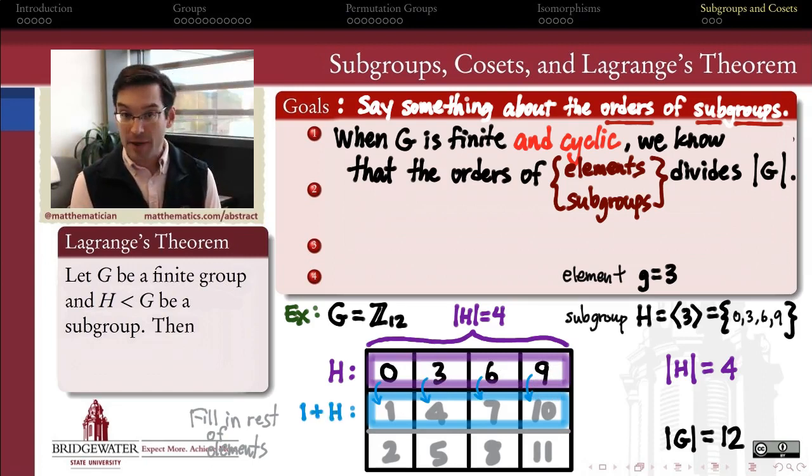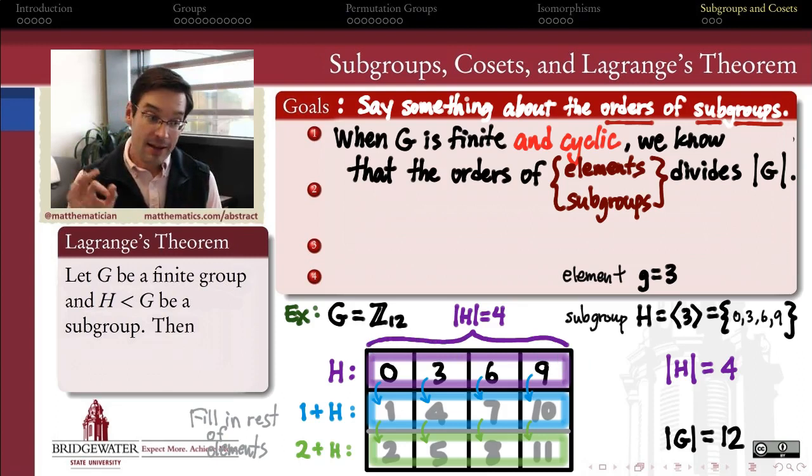And yet, it's still an interesting enough structure that we want to study it in its own right. Instead of calling it H, we could call it 1 plus H. After all, it is element-wise exactly the same thing as adding 1 to each of the elements of the set H. Same thing with our last row, we could call it 2 plus H. Where the purple row H here is a subgroup of G, the blue row and the green row are not subgroups, but they're so closely related to the subgroup H that we'll be able to study their properties.